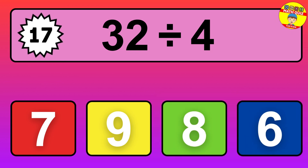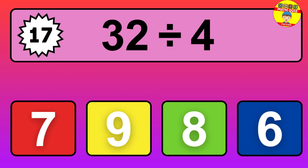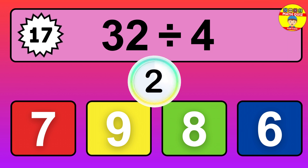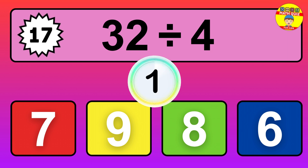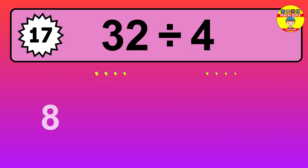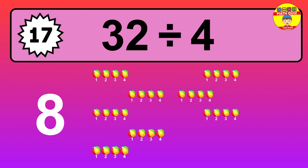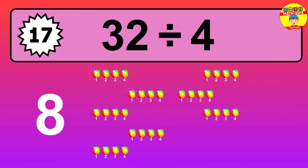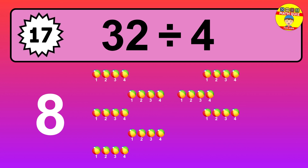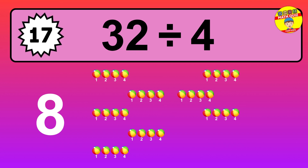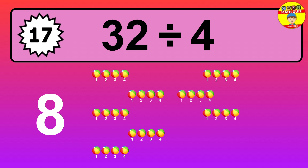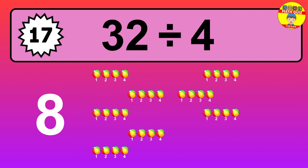32 divided by 4 is... time to think. Let's go to the solution. Divide the number 32 by 4. Each group contains 4 units, so dividing 32 by 4 results in 8 equal groups. Thus, the result is: 32 divided by 4 equals 8.